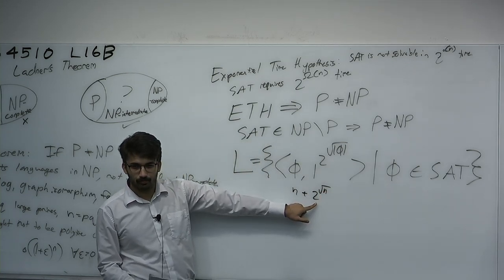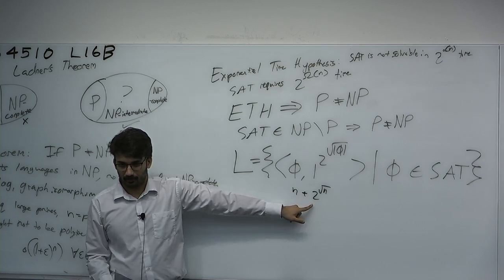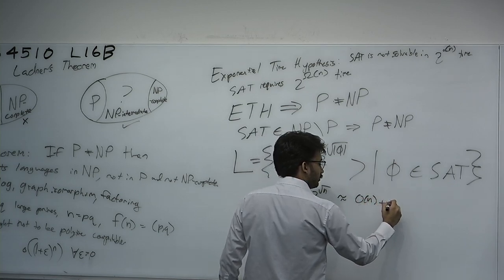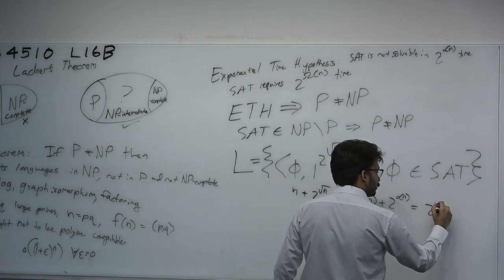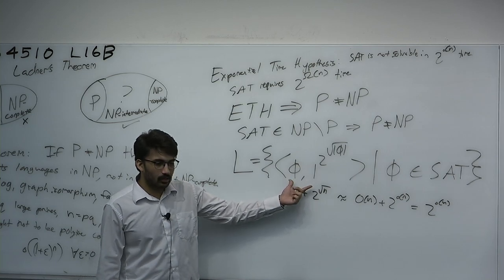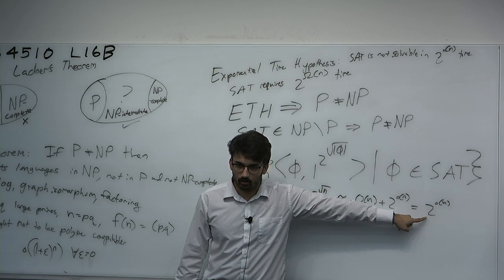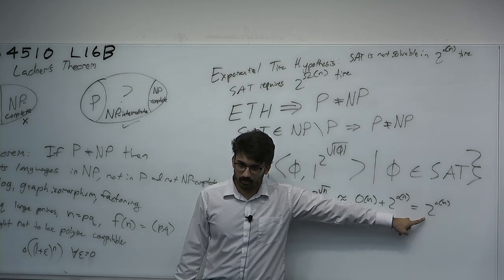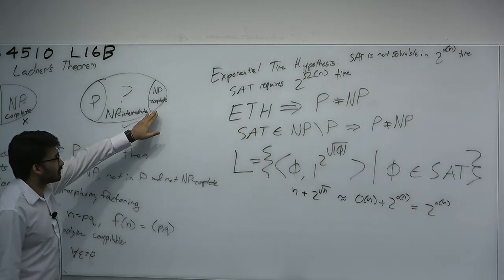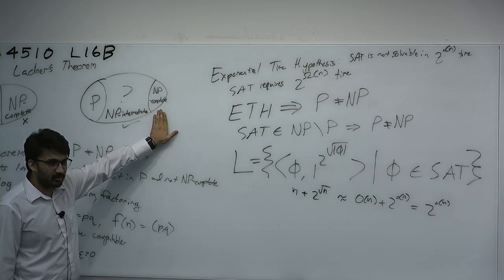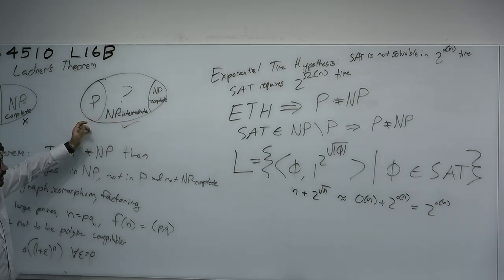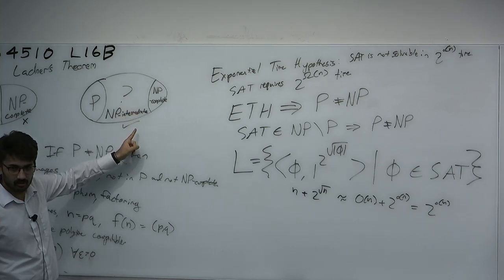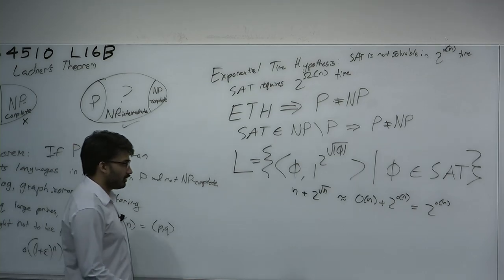Now, 2^√n — is this bigger or less than an exponential? This is strictly less than exponential, so this is like 2^(o(n)). We've padded by a sub-exponential amount. However, 2^(o(n)) is bigger than any polynomial. So if NP-complete problems only have exponential-time algorithms and P problems are polynomial time, this quasi-polynomial amount is bigger than any polynomial yet less than any exponential. It's going to help us split into the grey area in between. That's the motivation for why we've chosen this specific language.